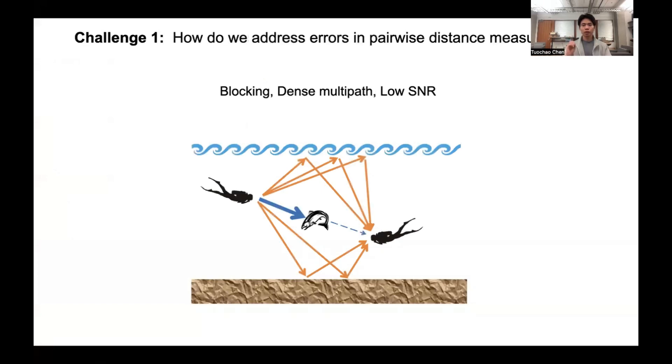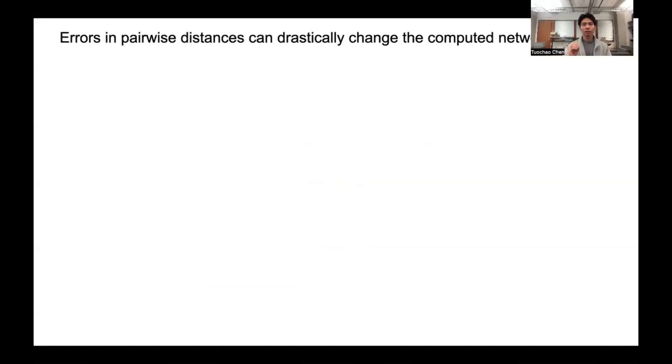To do this in practice, however, we need to resolve three key challenges. The first challenge is error in pairwise distance measurement. In underwater scenarios, we might have significant multipath and blocking, which may result in very large errors in distance measurement.